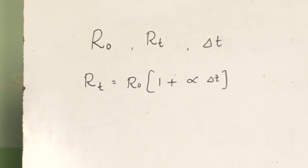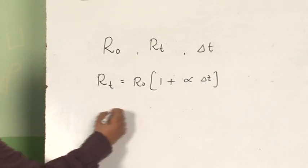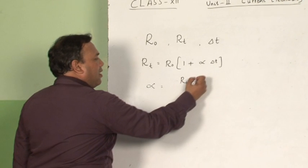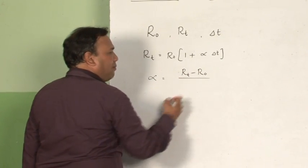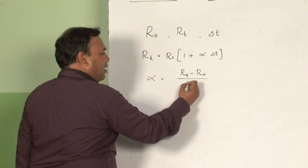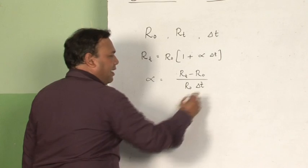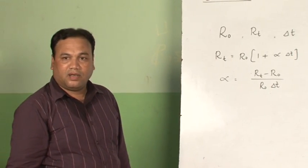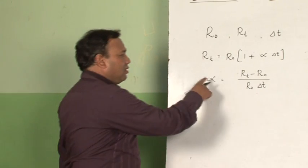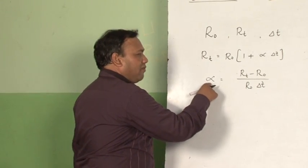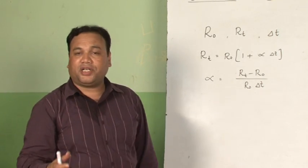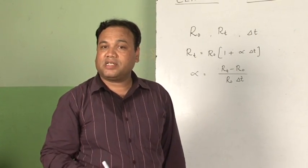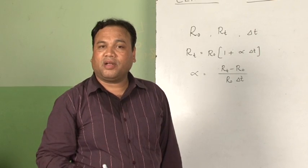Let us write the equation for alpha. Alpha is written as (R T minus R naught) divided by (R naught multiplied by delta T). This alpha is called the temperature coefficient of resistance of that particular material.